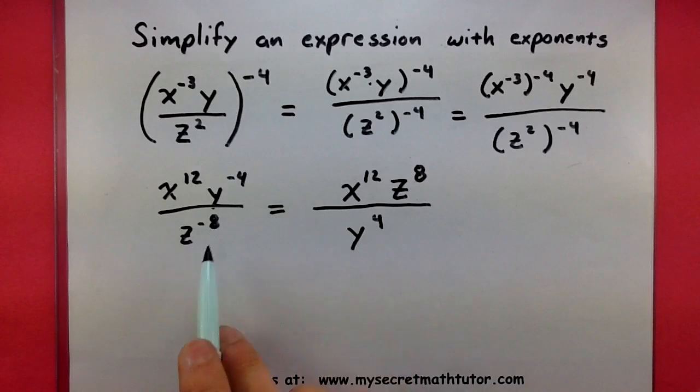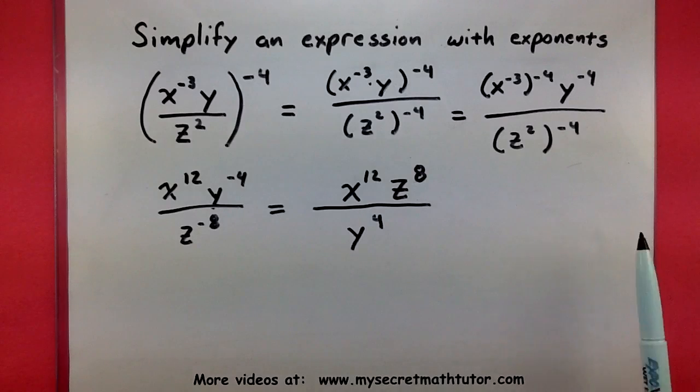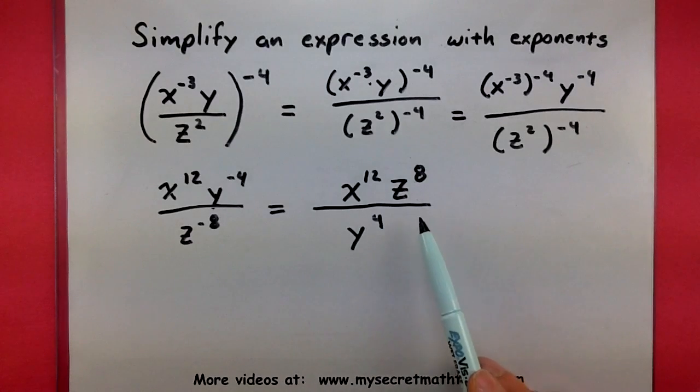And as you can see, this will handle both of our negative exponents just fine. So when we're all done simplifying, our answer becomes x to the 12th times z to the 8th, all divided by y to the 4th.